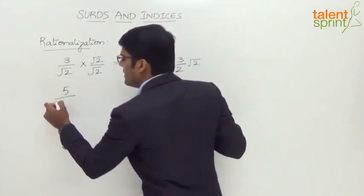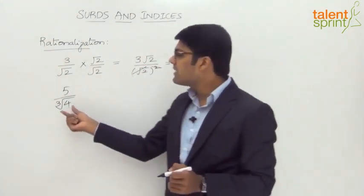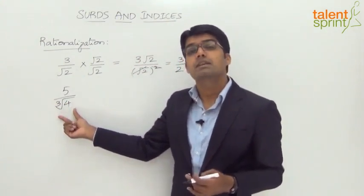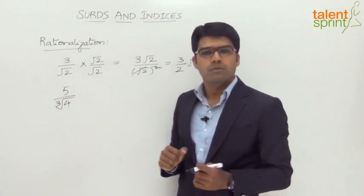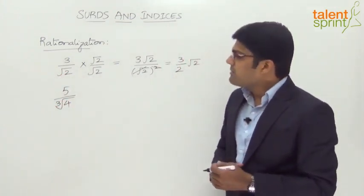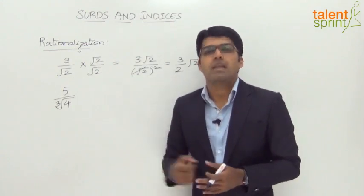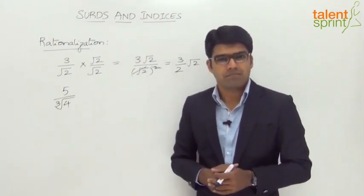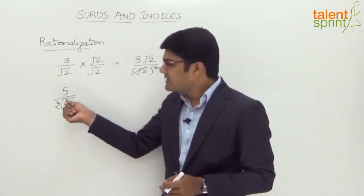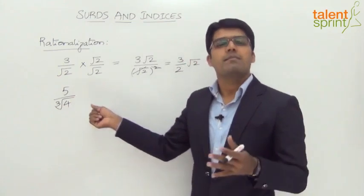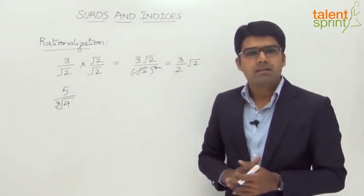Let us say we have 5 divided by cubed root of 4. This has to be simplified — we need to eliminate this cubed root in the denominator. From the laws of surds and indices, we know that the nth root of a to the power n is equal to a. Here we have cubed root of 4. If we can get 4 cubed, this cubed root and that cube get eliminated. The nth root and power n both cancel out, leaving only the real number a.